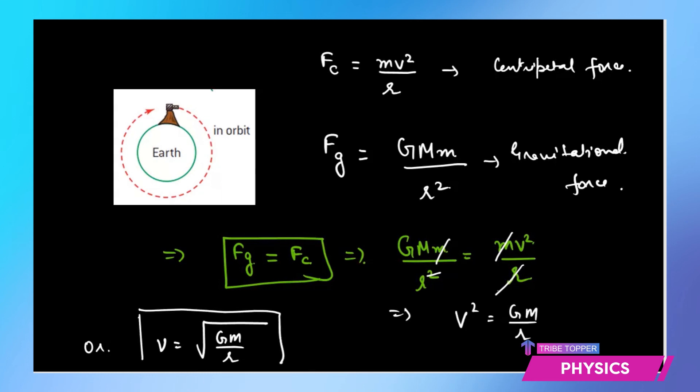And as you can see, this orbital velocity expression depends on the mass of the planet and this distance r at which the satellite is orbiting. So orbital velocity will be different for different radius of orbit and for different mass of the planet.